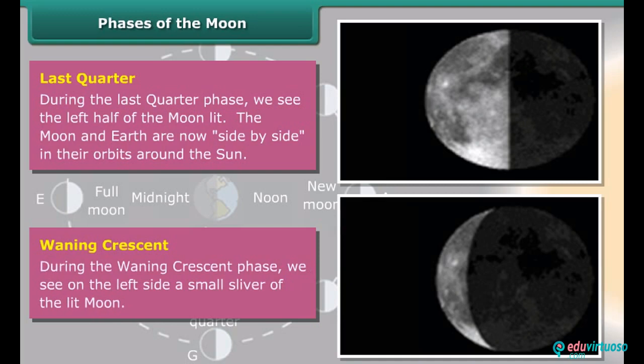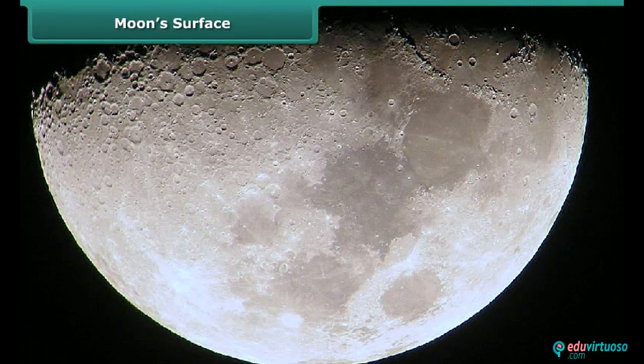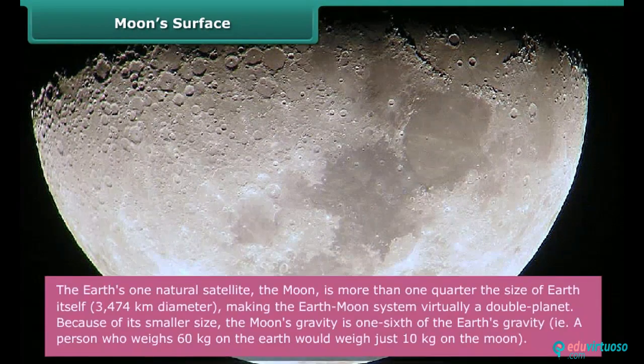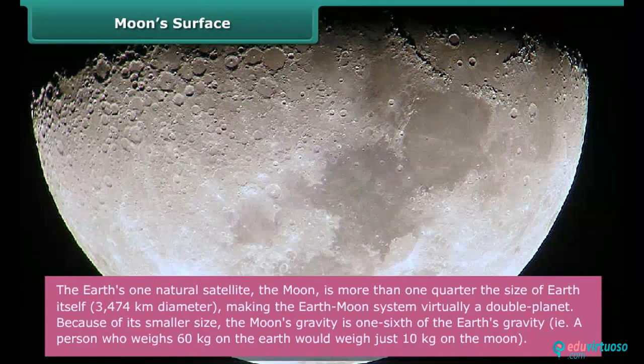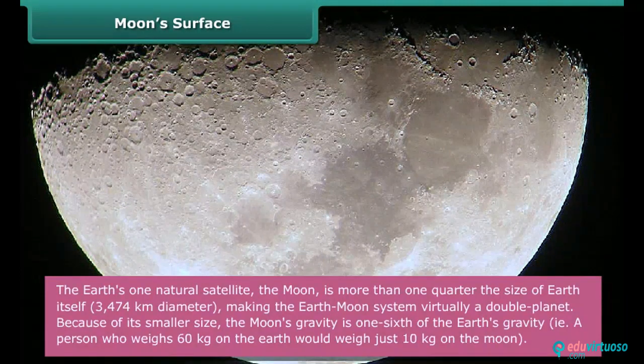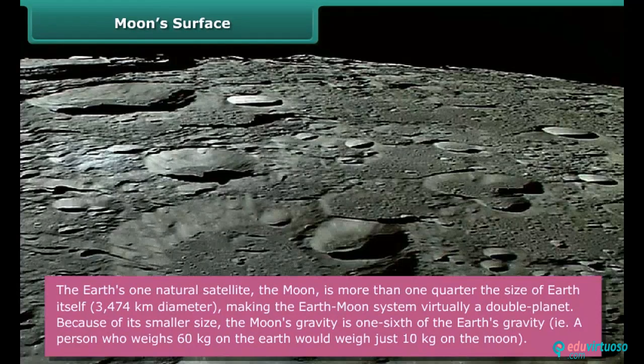Moon's surface. The Earth's one natural satellite, the Moon, is more than one quarter the size of Earth itself—3,474 km diameter—making the Earth-Moon system virtually a double planet. Because of its smaller size, the Moon's gravity is one-sixth of the Earth's gravity. That is, a person who weighs 60 kg on the Earth would weigh just 10 kg on the Moon.